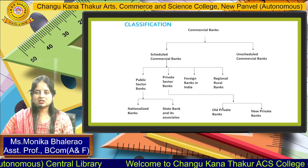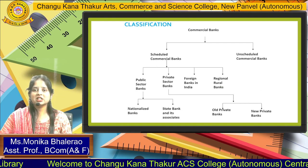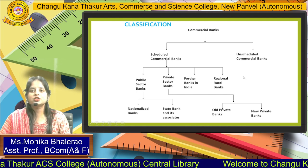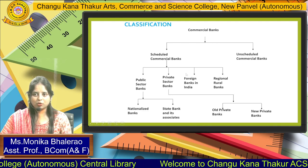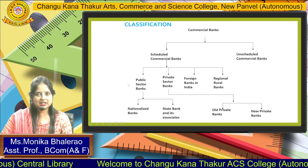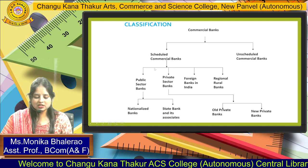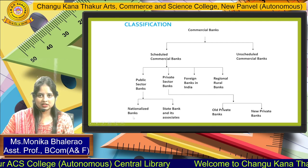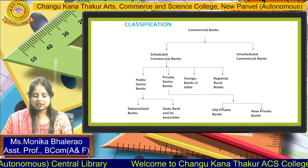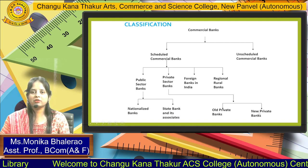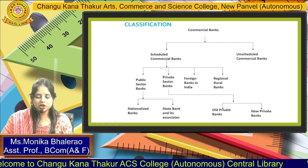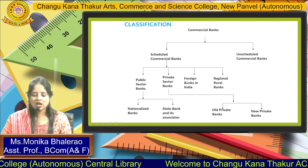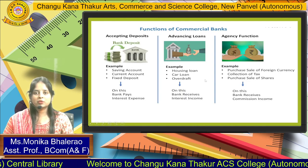The classification of commercial banks: they are first divided into scheduled commercial banks and non-scheduled commercial banks. Scheduled banks are further divided into four parts: public sector banks, private sector banks, foreign banks, and regional rural banks. Public sector banks are classified into nationalized banks and State Bank and its associates. Private sector banks include old private banks and new private banks.